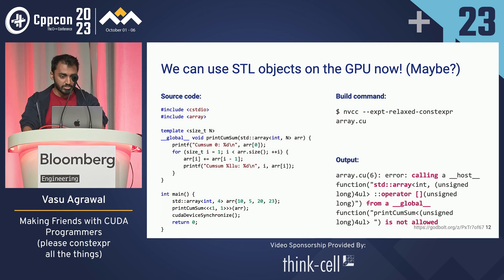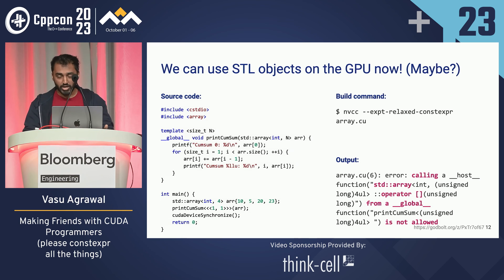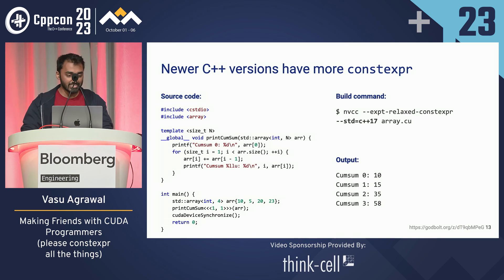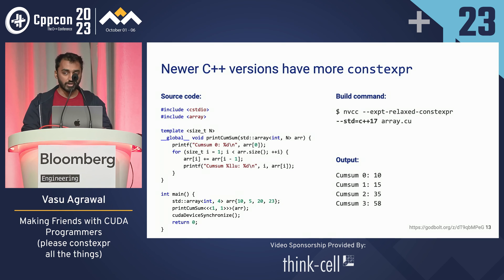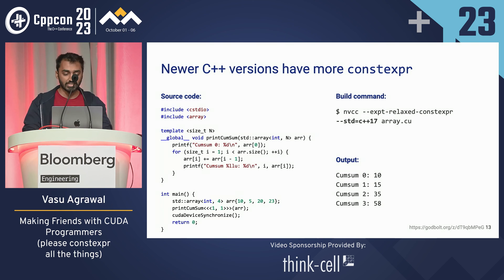The error is: calling std::array operator[] from a global is not allowed — meaning we're trying to call code that hasn't been tagged constexpr; we're trying to call host code. The solution is that newer C++ versions have more constexpr: in C++17, the standard added constexpr support for the non-const operator[] for std::array. When we build with C++17, we can correctly see the cumulative sum of elements 0, 1, 2, 3 as listed.